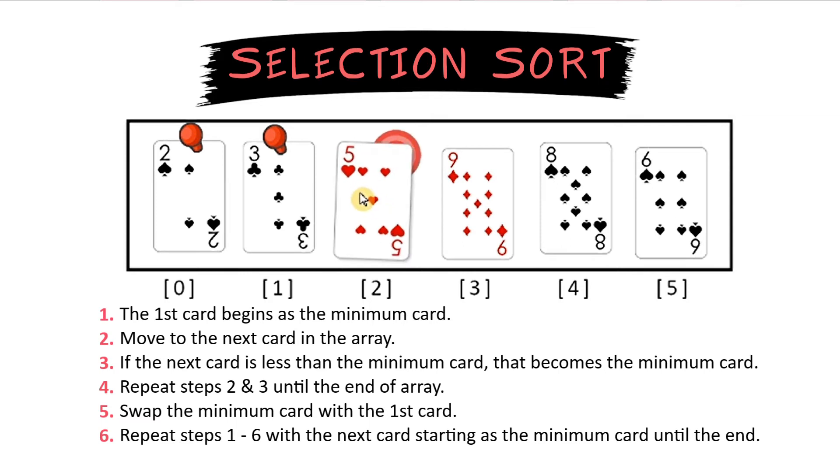We'll start the process again with the 5. 5 is the minimum number. We'll check 9 to see if it's smaller. It is not. We'll check 8. It is not. And 6 it is not so no swapping needs to be done. We can just move to the next card and we will mark 5 as sorted.